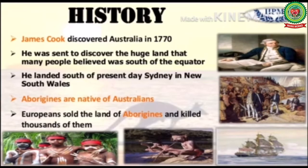James Cook discovered Australia in 1770. He was sent to discover the huge land that many people believed was to the south of the equator. He landed south of present-day Sydney in New South Wales.